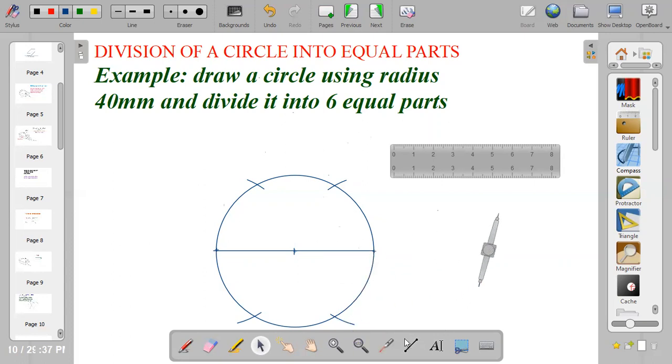Then bring out your ruler. Join this point to this point, join this point to this point, then I'll also join this point to this point.